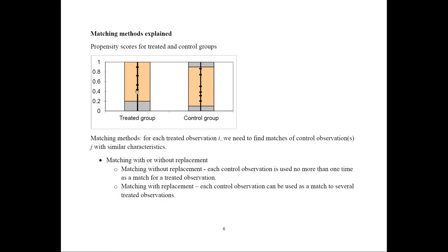For each treated observation i we need to find matched control observations j with similar characteristics. Sometimes there is one match, sometimes multiple. There are several matching methods, with or without replacement. Without replacement means if a control observation is used as a match, it cannot be used again for any other treated observation.